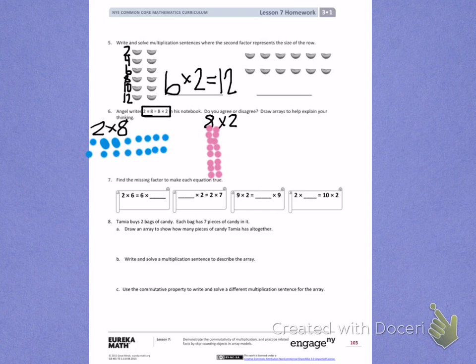Number 7. Find the missing factor to make each equation true.